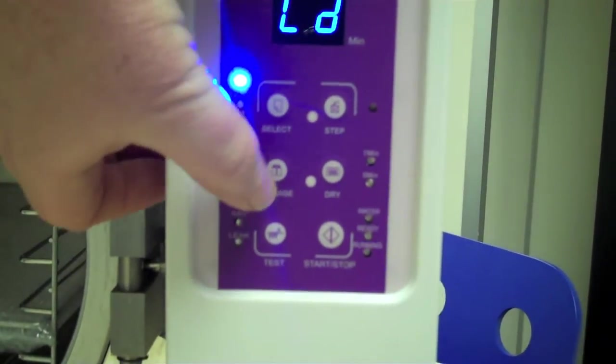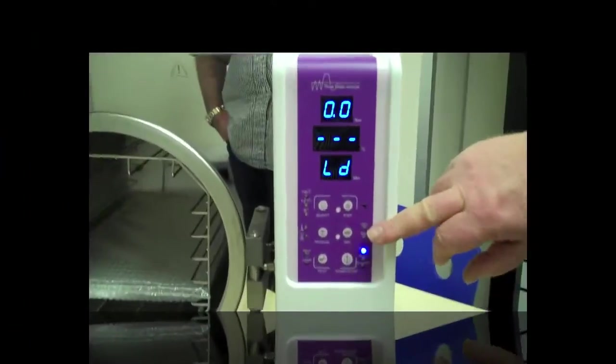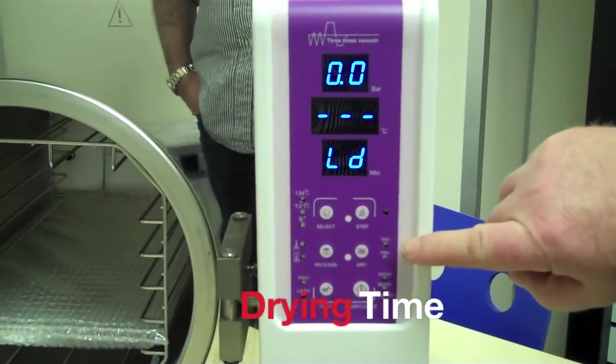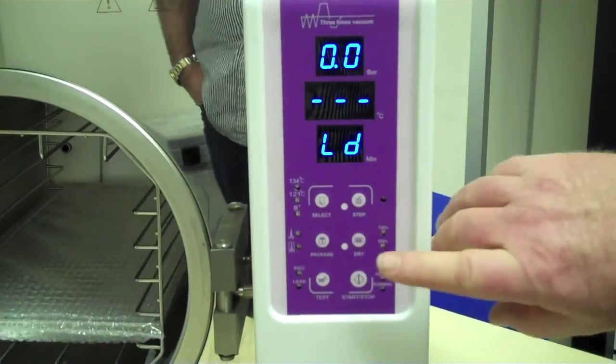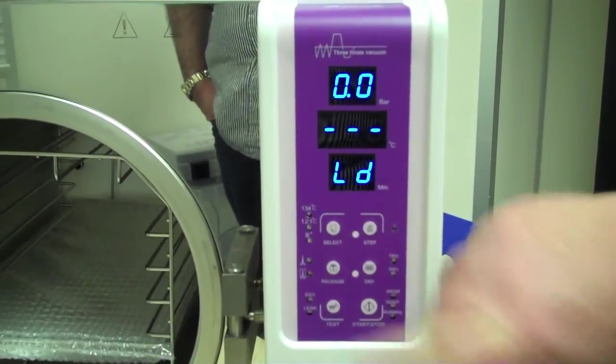Once you have done that, you then go to the wrapped and unwrapped parts. The drying time can be set here. Once you set the first two parameters, set the drying time.